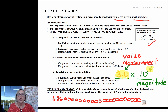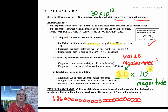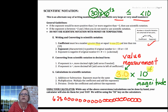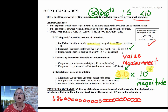In chemistry, our coefficient has to be a number that is greater than or equal to 1 but less than 10. I would not write this as 30 times 10 to the 13th — that would not be correct scientific notation. The exponent tells us whether it's a very large number, in which case it will be positive, or a very small number, in which case it will be negative.